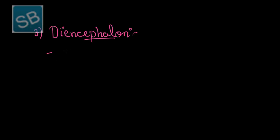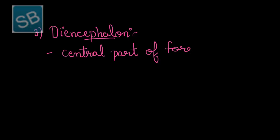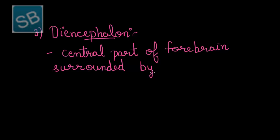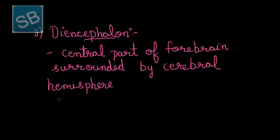Now comes the third region of the forebrain, that is, the diencephalon. The diencephalon is a structure that forms the central part of the forebrain, surrounded by the cerebral hemisphere, in such a manner that it encloses the cavity of the third ventricle.